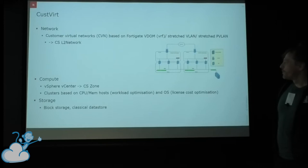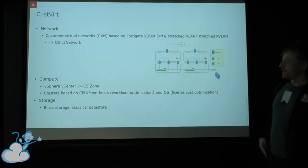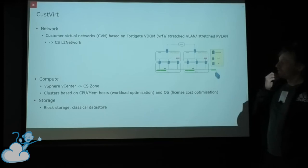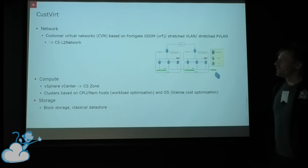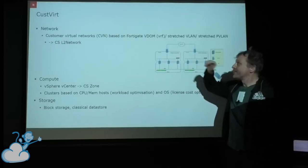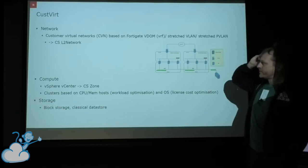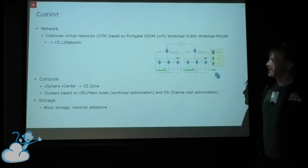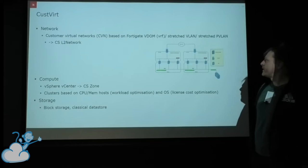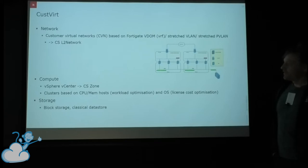Some more words about the network. We have a network infrastructure we call customer virtual networks, which is based on a Layer 3 interface on FortiGate VDOMs. All things are connected to these FortiNet VDOMs — internet accessibility as well as classical WAN networks that customers use to access virtual machines in our data center. We use stretched VLANs between data centers and stretched PVLAN on the backup interfaces. We have these 16 vCenters running.